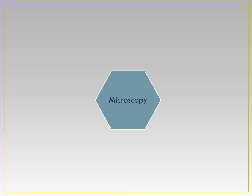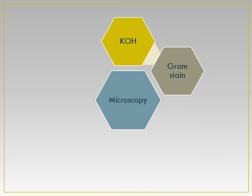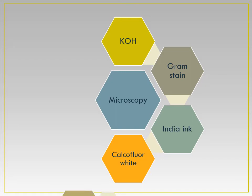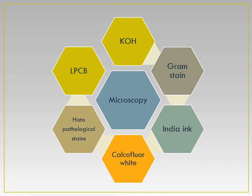We will now discuss direct microscopy. This includes the KOH — potassium hydroxide — preparation, the Gram stain for yeast and yeast-like fungi, India ink preparation as a negative stain, Calcofluor white stain, histopathological stains including Periodic Acid-Schiff (PAS) and Gomori's Methenamine Silver (GMS), and lastly LPCB, which is the most important among this list.